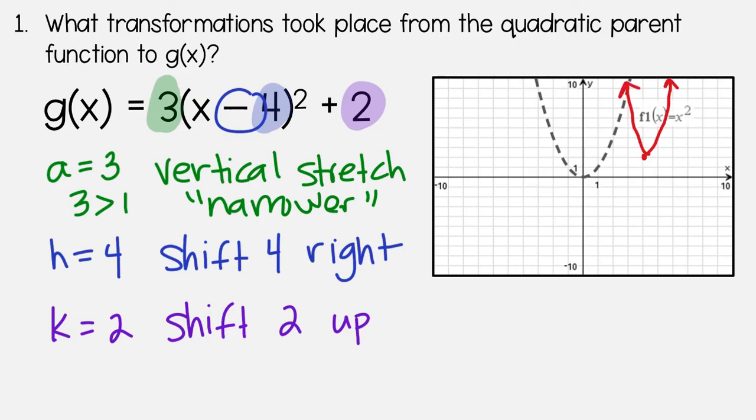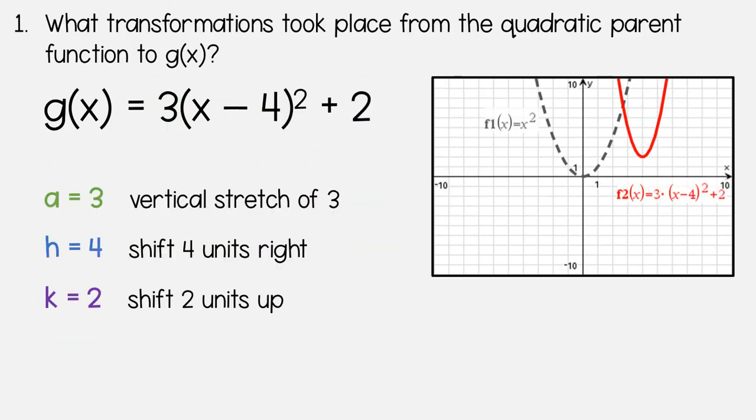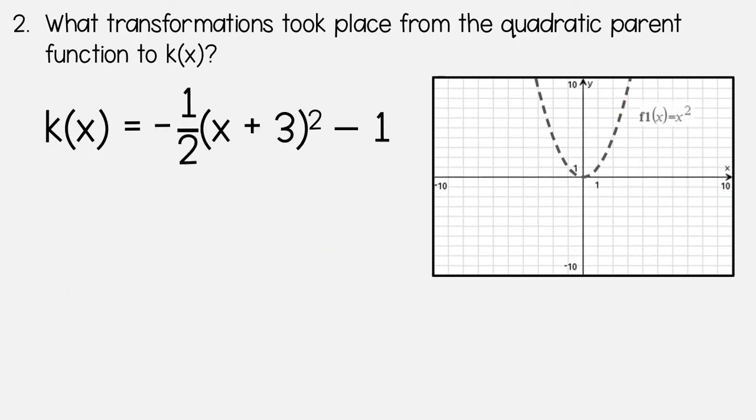So let's check our answer on the next slide. So yeah, we were pretty darn close with our picture. And those are my transformations. So one more example. What transformations took place from the quadratic parent function to k of x? So again, we're going to go in order. This is our a value.